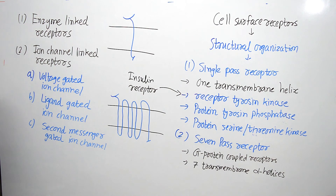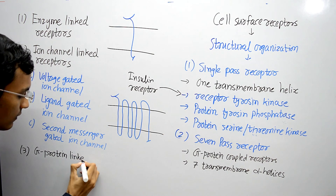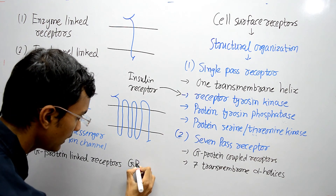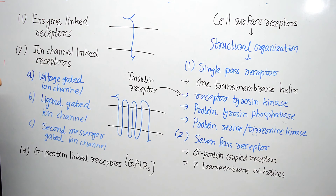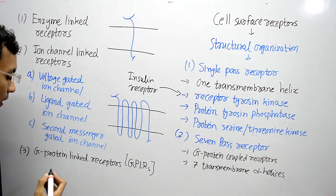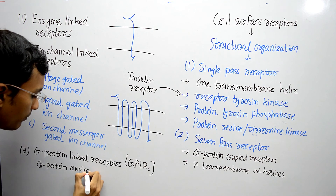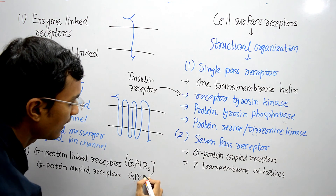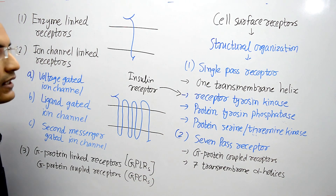The third type of cell surface receptor is G-protein-linked receptor, also known as GPLR. Another name for the G-protein-linked receptor is G-protein-coupled receptor. These are the 3 types of cell surface receptors.